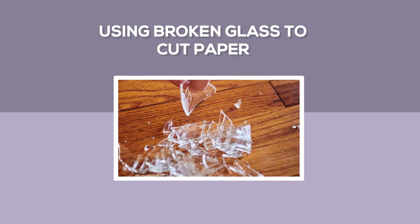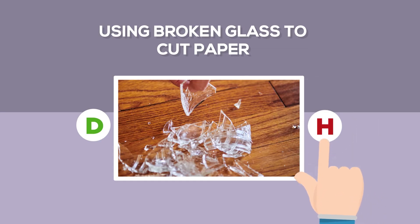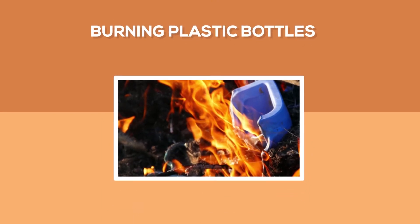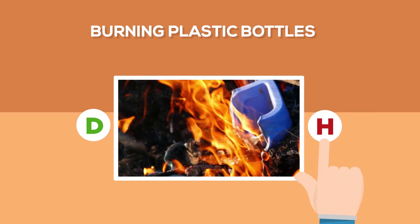What is your answer? The answer is H! It's harmful! Here is the fourth: covering the textbook with acetate. What is your answer? Did I hear it right? Correct! The answer is D! It's desirable! You are doing well! And the fifth is burning plastic bottles. What is your answer? Great! The answer is H! It's harmful! What is your score? The highest is 5! I know you did well!